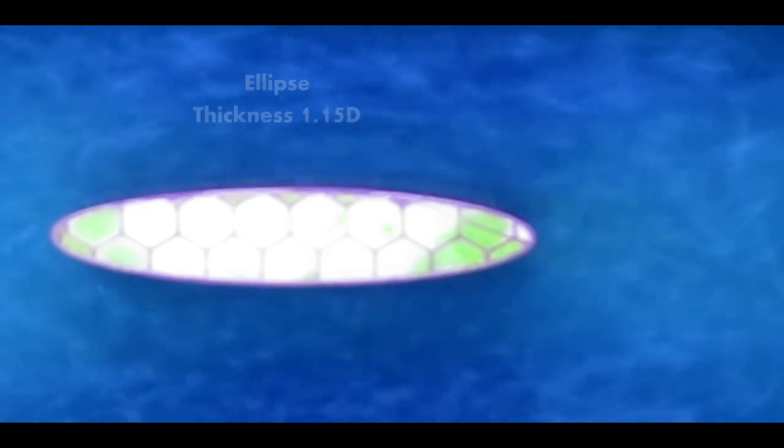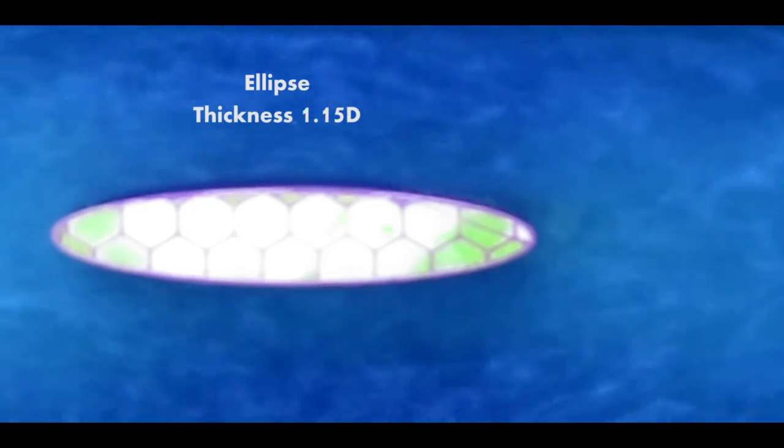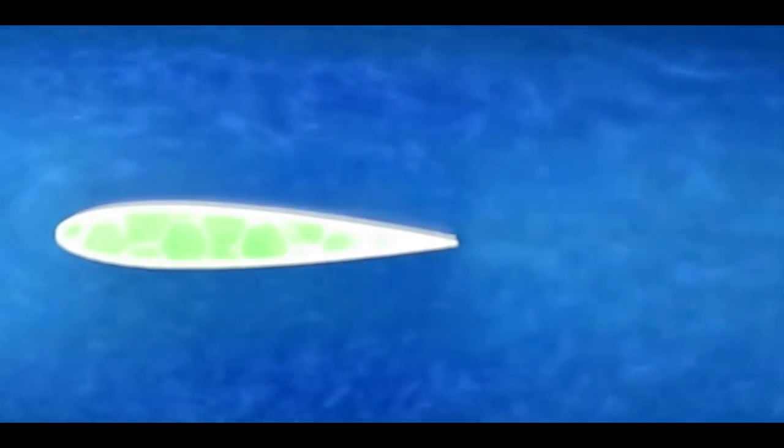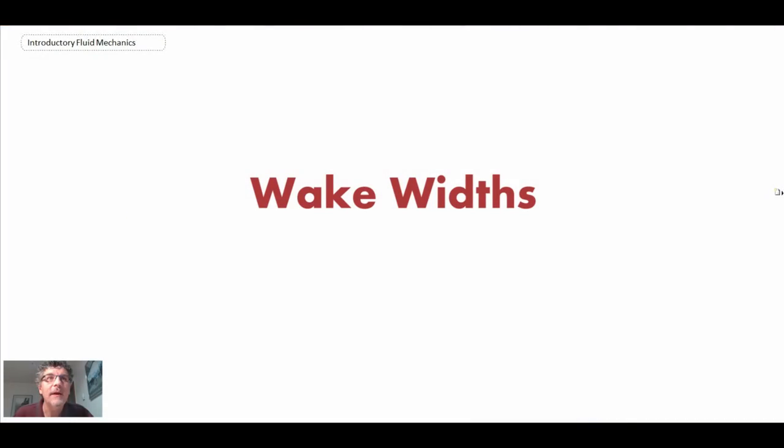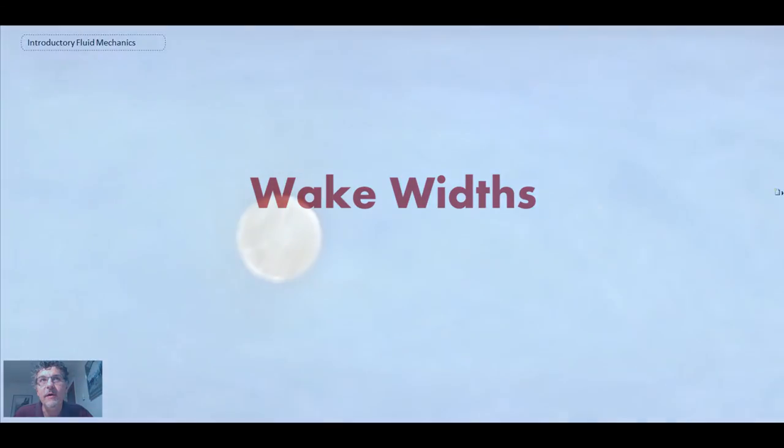What we start with is flow over a circular cylinder, diameter d. We're going to look at an ellipse—an elliptical body, thickness 1.15 d, so it's thicker than the cylinder. Finally, this is a NACA 0015, thinner at 0.77 d.